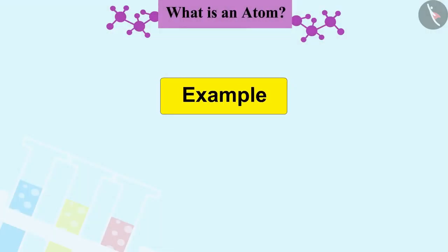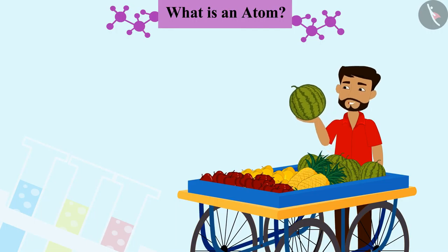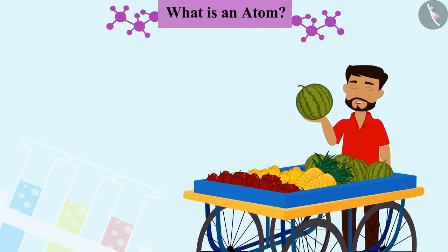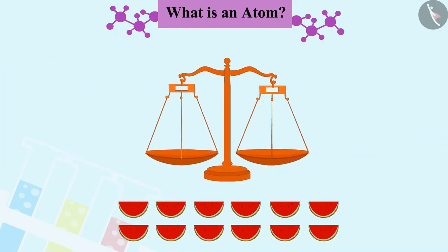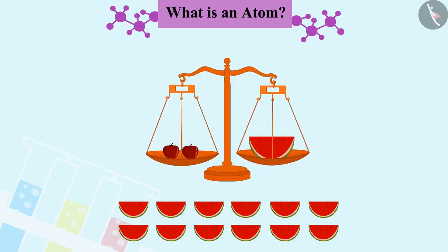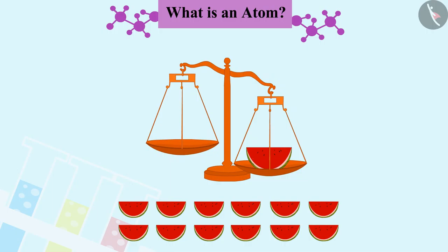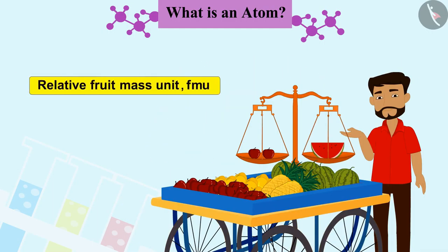Let us understand this by a daily life example. Imagine a salesman carrying a watermelon and saying its mass is 12 units. He then slices 12 equal pieces of watermelon and finds that the mass of each fruit he sells is relative to a piece of watermelon. Now he sells fruits by relative fruit mass unit (FMU).